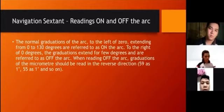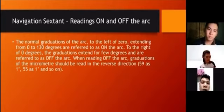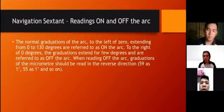Navigation sextant readings on and off the arc. The normal graduations of the arc to the left of zero, extending from 0 to 130 degrees, are referred to as on the arc. To the right of zero degrees, the graduations extend for a few degrees and are referred to as off the arc. When reading off the arc, graduations of the micrometer should be read in the reverse direction, 59 as 1 and 55 as 1 and so on.